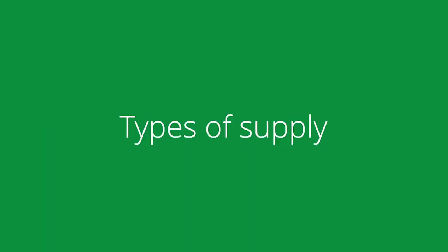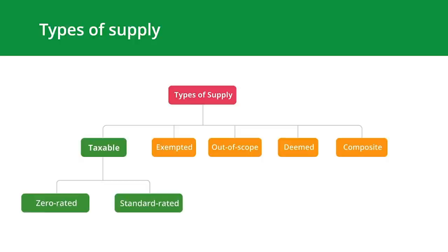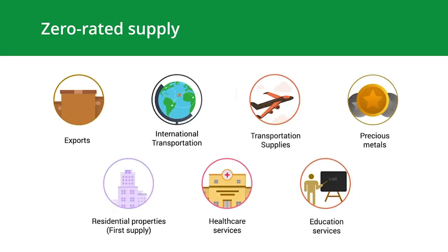Now let's move on to the types of supply under VAT. They are broadly classified into three categories. Under taxable, we have zero-rated and standard-rated, and then we have exempted supply. We also have three other categories: out-of-scope supply, deemed supply, and composite supply.